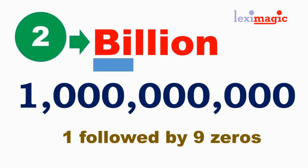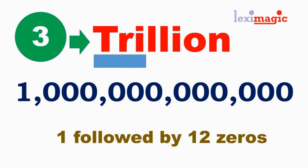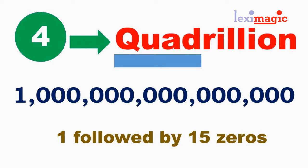Next, we come to the billion, which is one followed by nine zeros, or a thousand million. Then we come to the trillion, which is one followed by 12 zeros, and a quadrillion, which is one followed by 15 zeros.